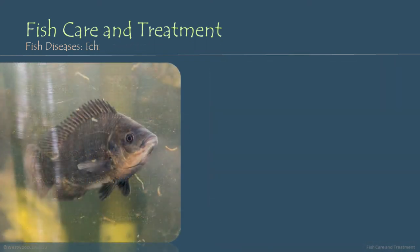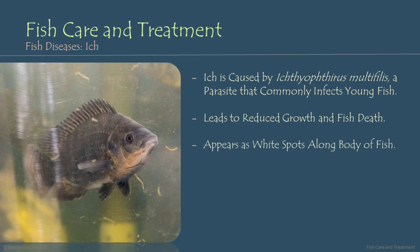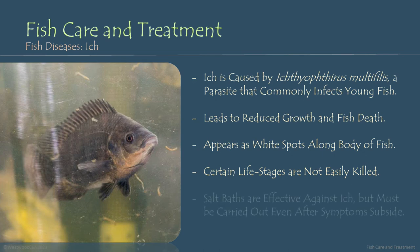Another fish disease you might see in your aquaponic system, though it's more common in young fish — typically in nursery systems or nursery hospital tanks — is ich. Ich is caused by a parasite that commonly infects young fish and can lead to reduced growth and fish mortality. Ich often appears as little white spots along the body of the fish. It's important to remember when treating for ich that certain life stages of this parasite are not easily killed. Although salt baths and salt dips are an effective treatment, they must be carried out even after symptoms subside to ensure you've killed off the parasite as it moves through its various life stages.